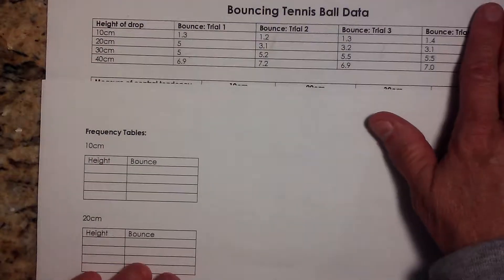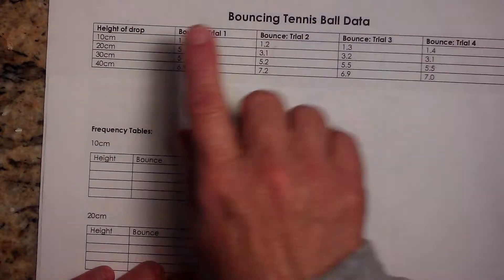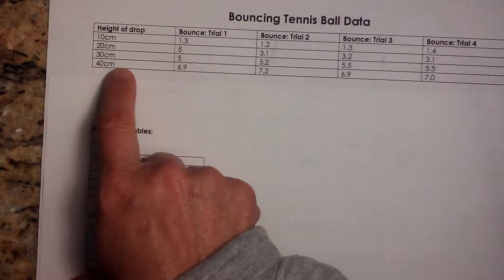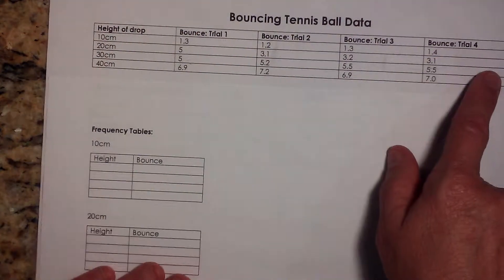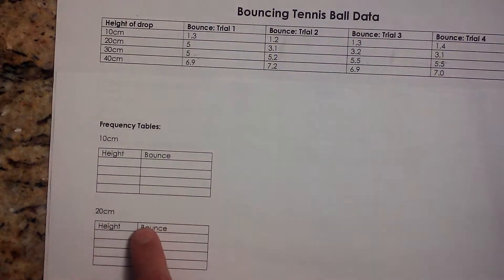So this is the third one and we're just going to talk about how to make a frequency table. So here is our data for dropping a tennis ball from four different heights and doing four trials to see how high they bounce. So we're going to take this data and just make a frequency table.